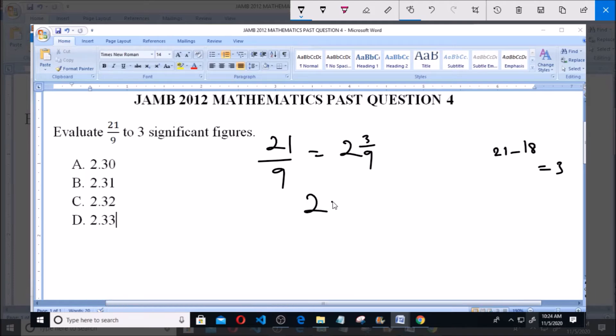3 over 9. Now dividing 3 by 9, let's use this long division method. So we have 3 and we have 9. Now 9 cannot go into 3, so we put zero point and add zero to make 30.